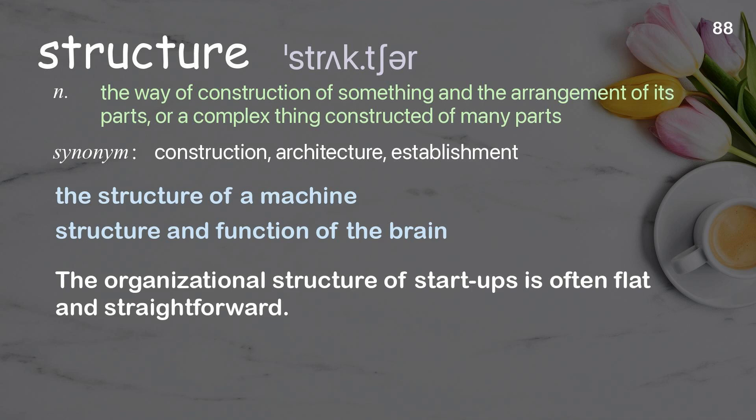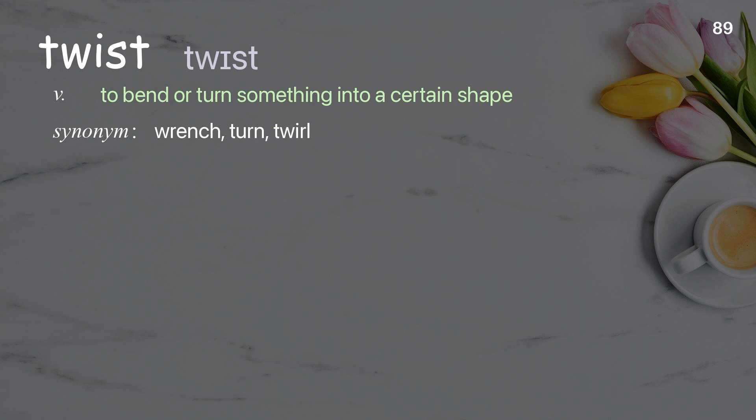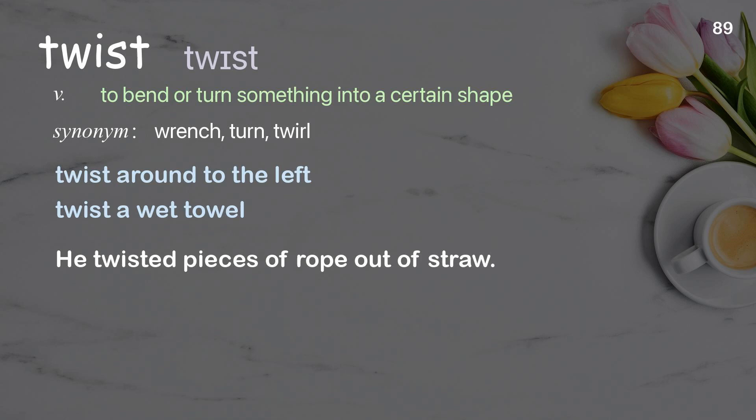Twist: to bend or turn something into a certain shape. Examples: twist to the left, twist a wet towel. He twisted pieces of rope out of straw.